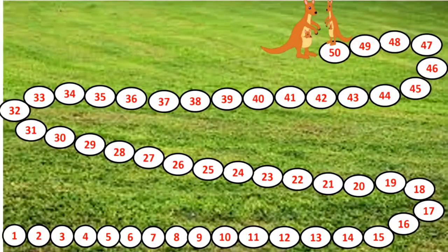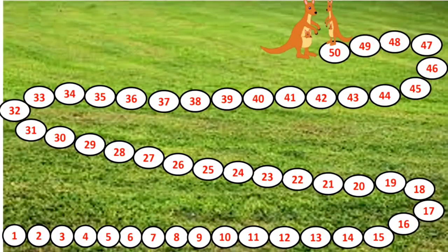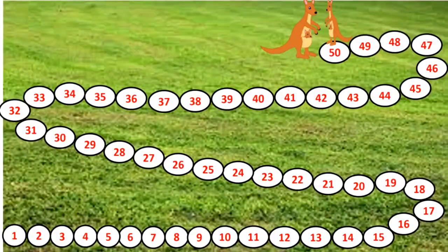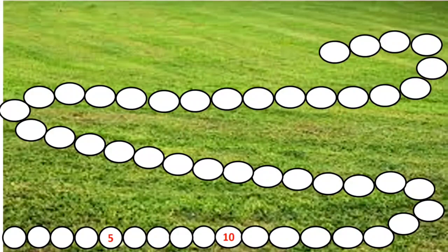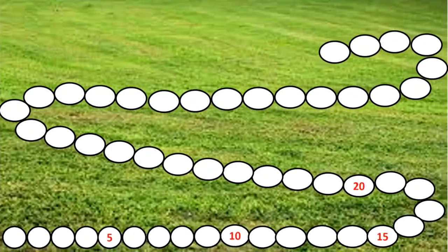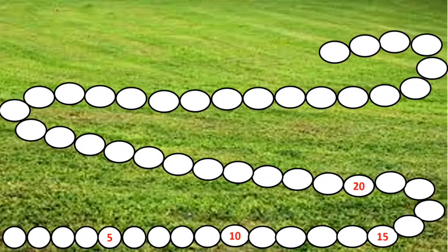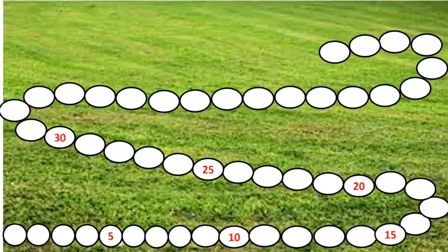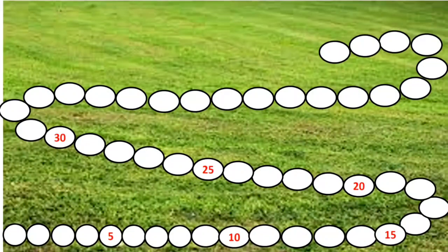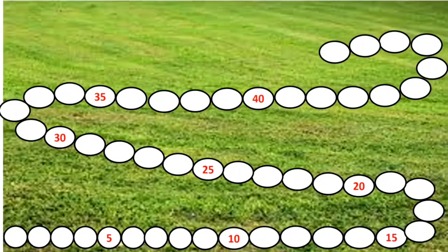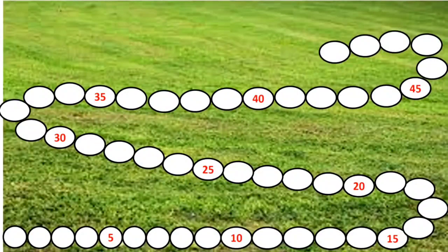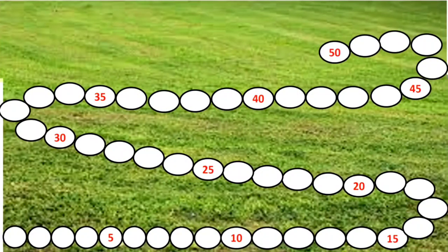So with this we have learnt the skip counting of 5. Let's revise this. 5. Children please repeat after me. 5, 10, 15, 20, 25, 30, 35, 40, 45, 50.